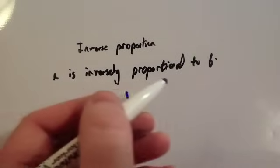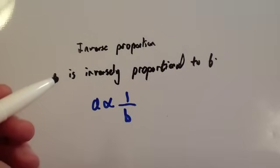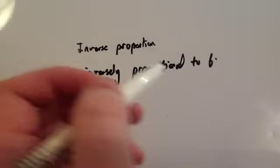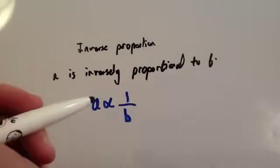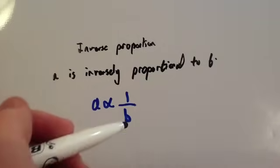So, if I wrote A is inversely proportional to B, inversely proportional means that as one value increases, the other value decreases. So, this time you write A, the proportional sign, and 1 over B.